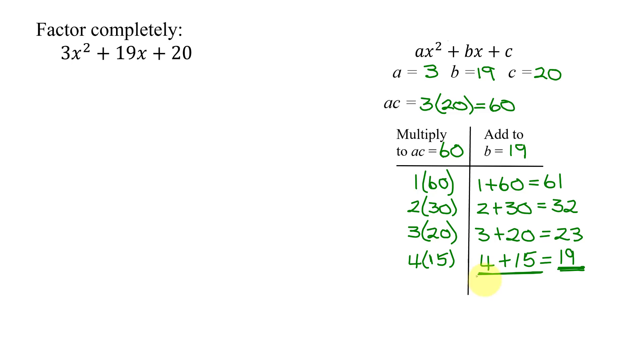But be careful. These are not my factors. What I'm going to do is break my middle term of 19x down into two terms using 4 and 15. So I'm going to have 3x squared plus 4x plus 15x plus 20. All I did was replace the 19x with 4x plus 15x. The reason I did this is 4 terms now are in my polynomial. How do we factor 4 terms? By grouping.